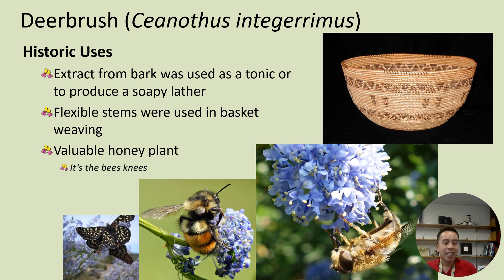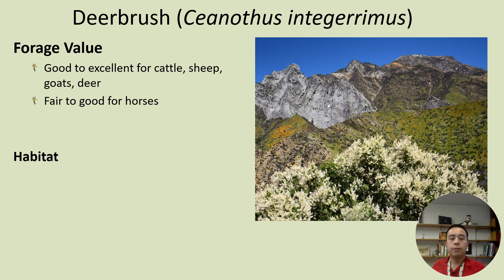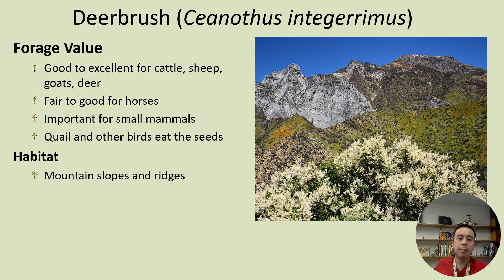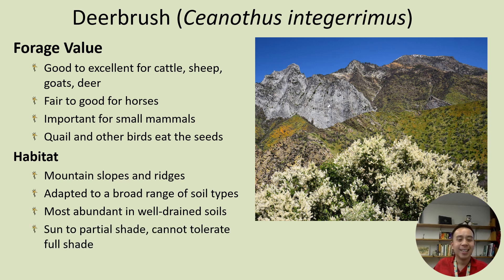It's often known as the bee's knees, and many other pollinators are interested in it as well. In terms of forage, it's good to excellent for cattle, sheep, goats, and deer, and relatively fair for horses. It's also a very important resource for small mammals, quails, and other birds who eat Ceanothus seeds. In terms of habitat, it typically occurs on mountain slopes and ridges, is adapted to a broad range of soil types, and is most abundant in well-drained soils. It typically occurs in sun to partial shade.